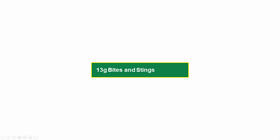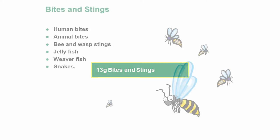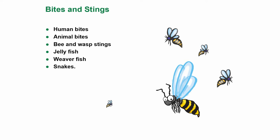The next module we're going to look at is bites and stings. Bites and stings can come from a variety of places, including human bites, animal bites, bee and wasp stings, jellyfish, weaver fish, and snakes.